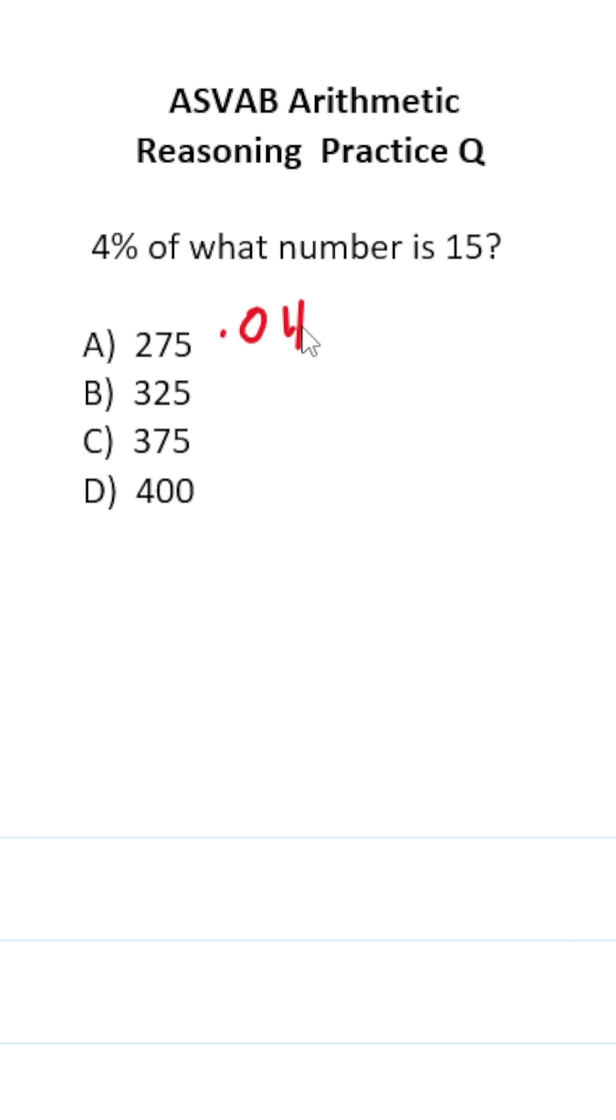4% in decimal form is 0.04. 'Of' means multiply. What number is unknown? So call that N. 'Is' means equals 15.